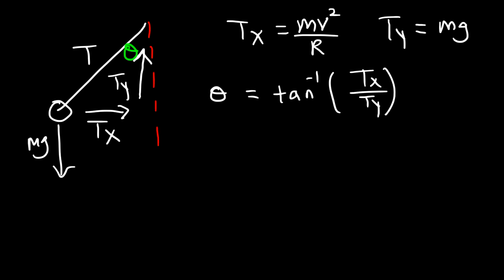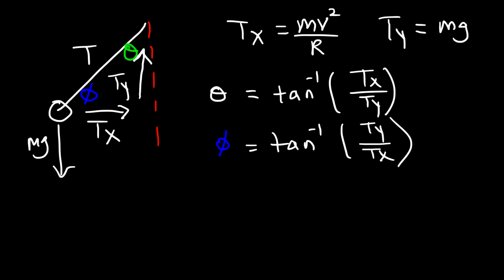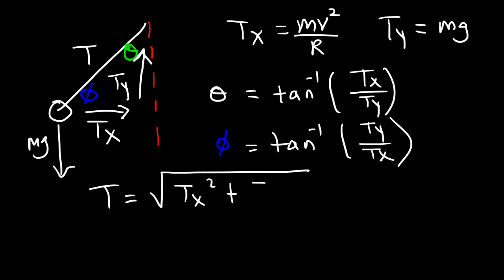If you need to find T, the tension force is simply equal to the square root of Tx squared plus Ty squared. Or if you want to find it directly using mass and speed, Tx is mv² / r and Ty is simply mg. Using the mass of the ball, the speed, and the radius, you can find the tension force directly. This equation also gives you the angle the rope makes with the vertical.